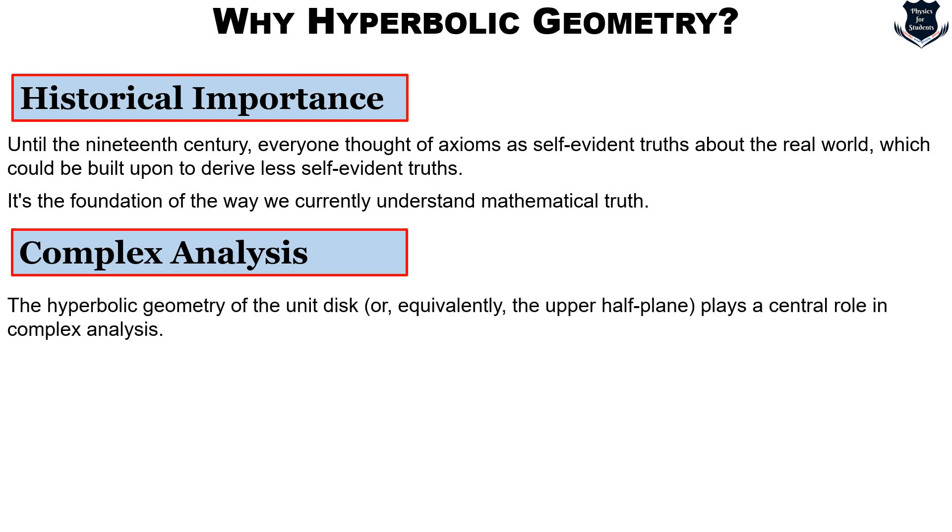The second one is that the hyperbolic geometry on the unique disk or we can say equivalently the upper half plane basically plays a central role in complex analysis. For example if we take the Schwarz-Pick Lemma, it says that any holomorphic map from the unique disk to itself is either an isometry of the hyperbolic metric or a strict contraction. This has important consequences for understanding the nature of holomorphic maps.